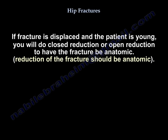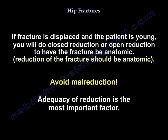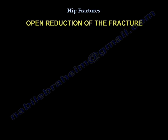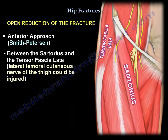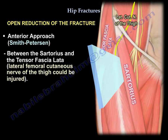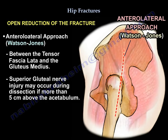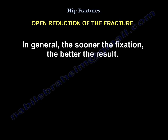If the fracture is displaced and the patient is young, perform closed or open reduction to achieve anatomic alignment. Adequacy of reduction is the most important factor — avoid mal-reduction. A healed femoral neck fracture with shortening is associated with poor functional outcome. For open reduction, you can use the Smith-Petersen approach — the anterior approach between the sartorius and tensor fasciae latae — noting that the lateral cutaneous nerve of the thigh can be injured. The Watson-Jones approach is between the tensor fasciae latae and gluteus medius; the superior gluteal nerve may be injured if dissection is more than 5 centimeters above the acetabulum. In general, the sooner the fixation, the better the result.